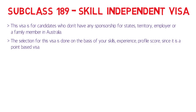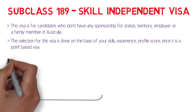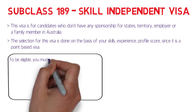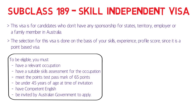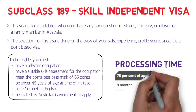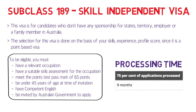The selection for this visa is done on the basis of your skills and experience profile score, since it is a points-based visa. To be eligible, you must have a relevant occupation listed in the in-demand occupation list, have a suitable skills assessment, and score a minimum of 65 points. You must also be under 45 years of age, have competent English, and be invited by the government of Australia to apply. Processing time is generally around six to nine months.